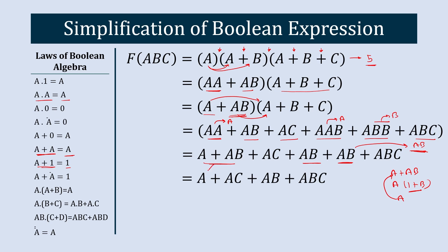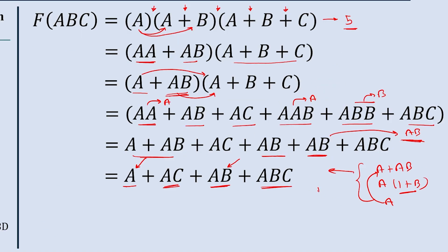This term A + AB simplifies to A, and the two AB terms simplify to a single AB. Similarly, A + AC simplifies to A. And for AB + ABC, if we let X = AB, then X + XC simplifies to X, so AB + ABC simplifies to AB.